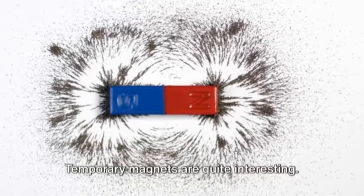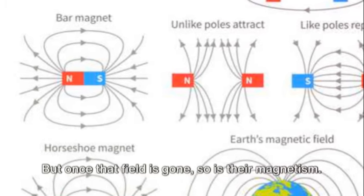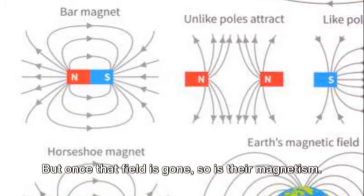Temporary magnets are quite interesting. They only become magnetic when they're in a magnetic field. But once that field is gone, so is their magnetism.